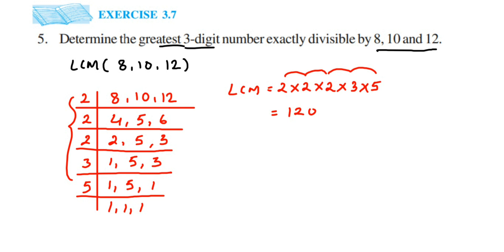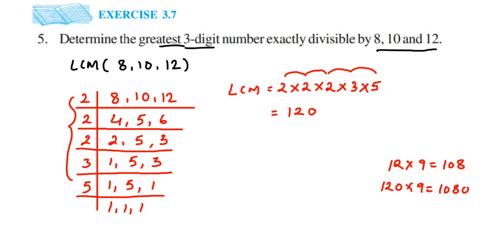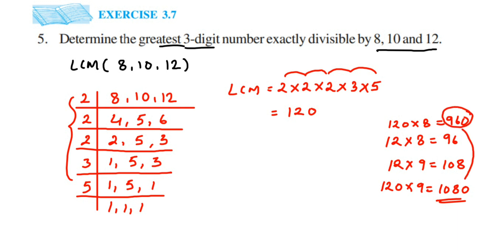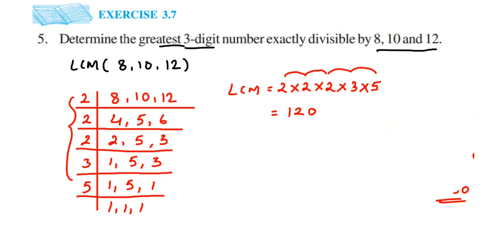We want the greatest 3-digit number, so we check the multiples of 120. Instead of listing the full 120 times table, we use the 12 times table as a shortcut: 12×9=108, so 120×9=1080, which is a 4-digit number — too large. And 12×8=96, so 120×8=960. Since 1080 comes after 960, the greatest 3-digit multiple of 120 is 960. Therefore, 960 is the greatest 3-digit number exactly divisible by 8, 10, and 12.